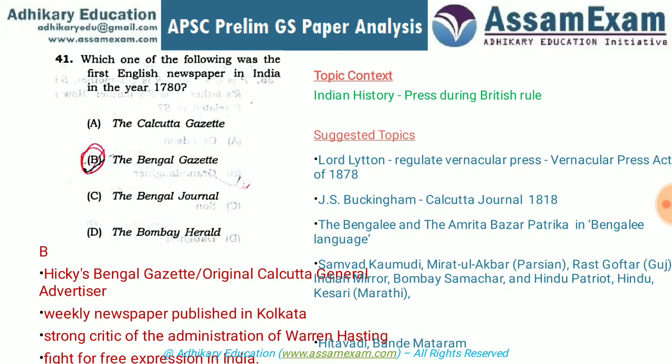That weekly newspaper was critical of the administration of Warren Hastings. Warren Hastings was the Governor General at the time, and his administration policies were criticized in that newspaper. It used to fight for freedom of press. This question is from Indian history, specifically about the emergence of press during British rule in India.